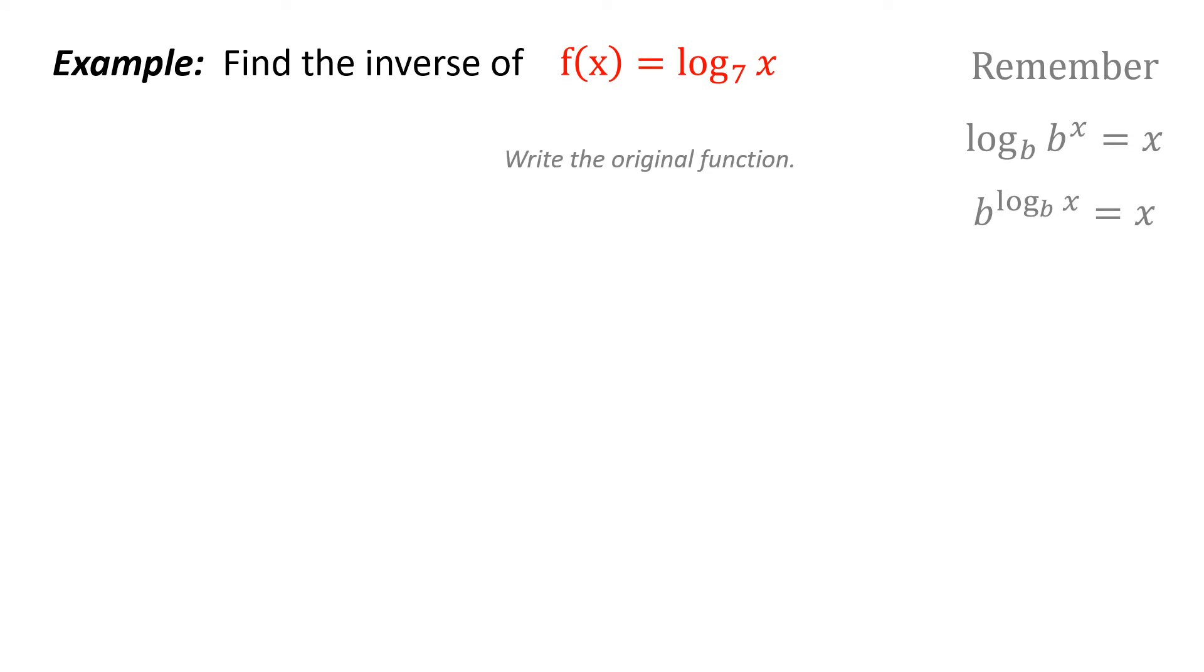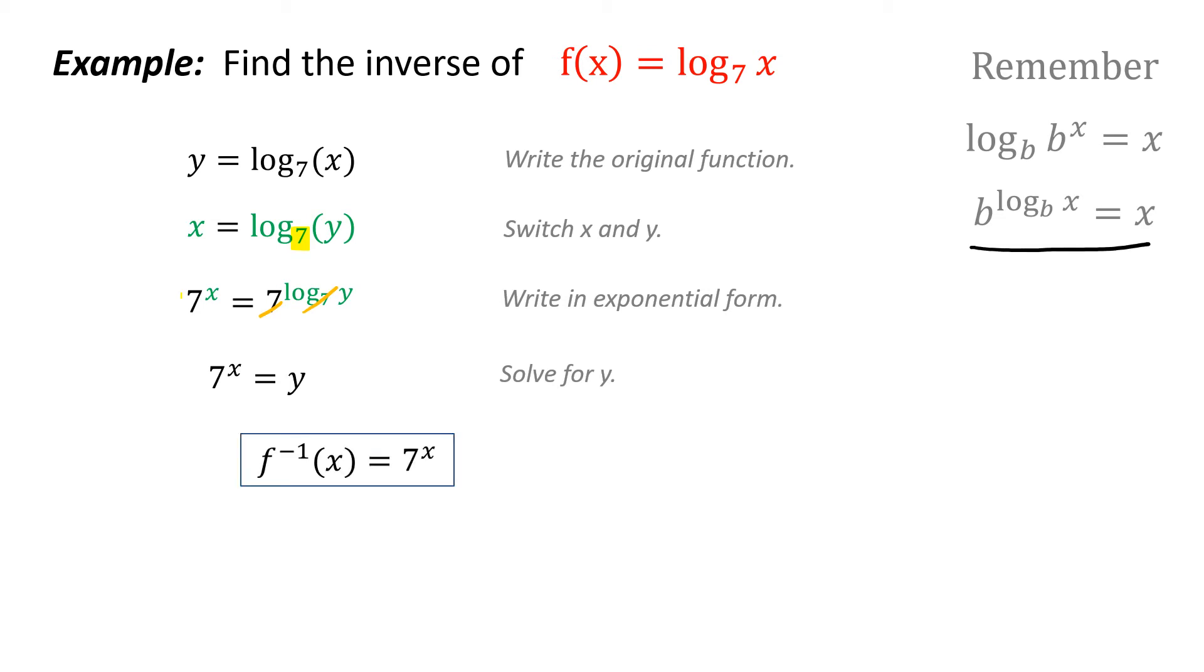So let's go ahead and do this. To get the inverse, first we have to write the original function using y instead of f of x. Next switch x and y. And now I have to write in exponential form, so notice what I did there is I made the base 7 the exponent base. And last we just have to solve for y. And if I use this property, this cancels out and we're left with y equals 7 to the x power. And I can just write it that way.